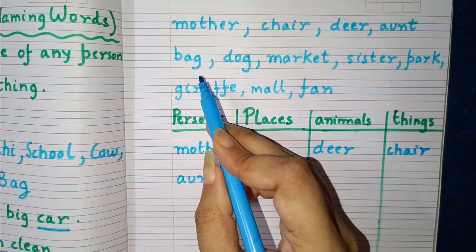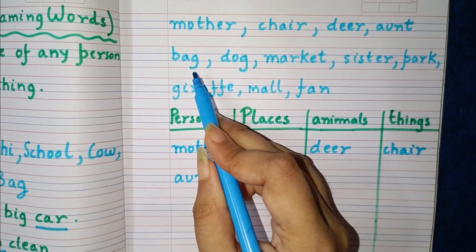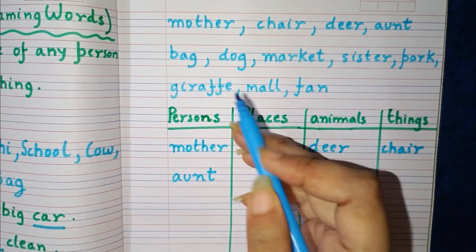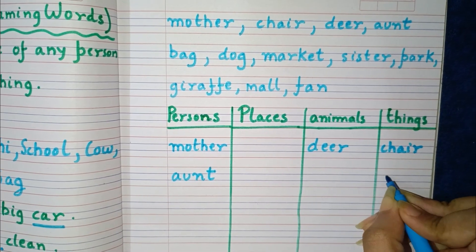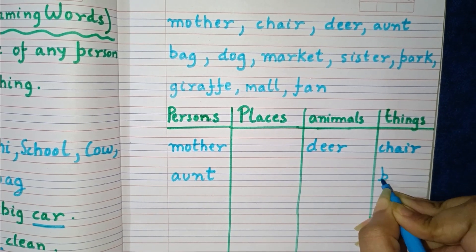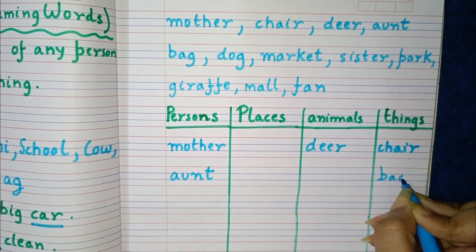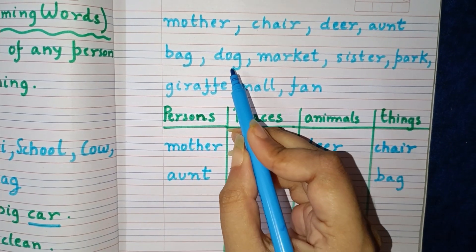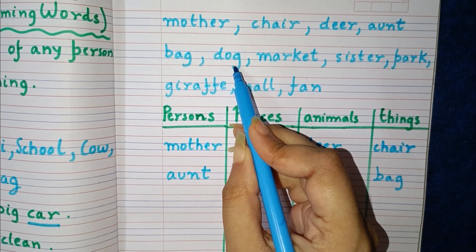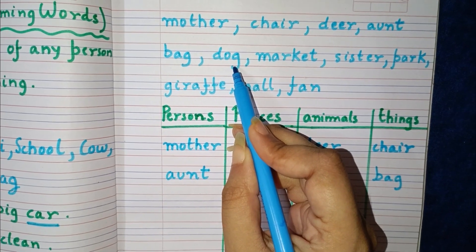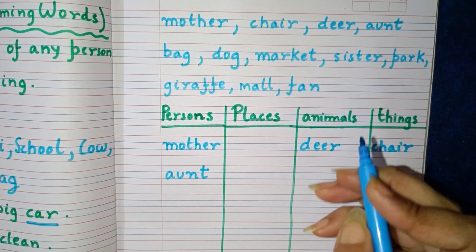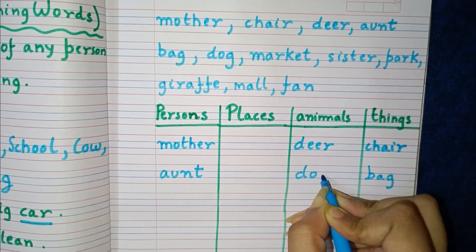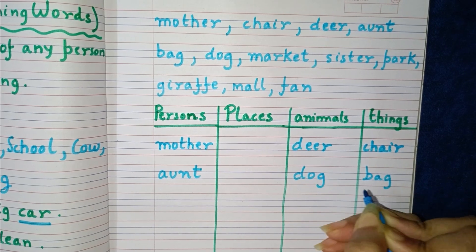Next is bag. Bag is a thing, so we will put it in the things column — B-A-G, bag. Next is dog. Dog is an animal, so we will put it in the animals column — D-O-G, dog.